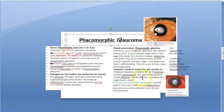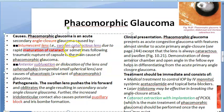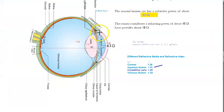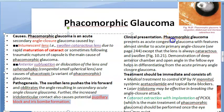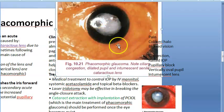Phacomorphic glaucoma means the lens is getting swollen, which happens in intumescent cataract — that is maturation of cataract. The lens swells, causing pupillary block and iris bombé formation. Aqueous accumulates at the back, the iris bulges forward, and the angle closes. This leads to raised intraocular pressure, optic nerve damage, and visual field defects.